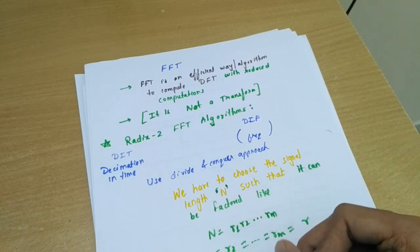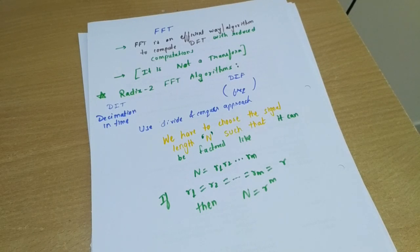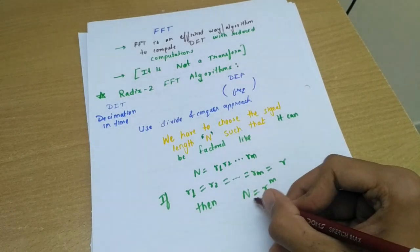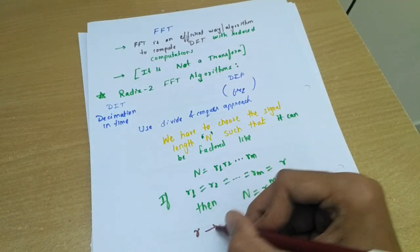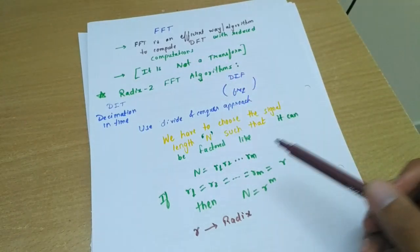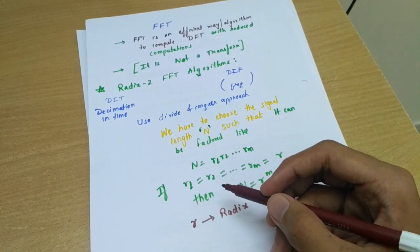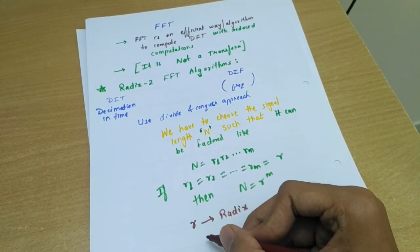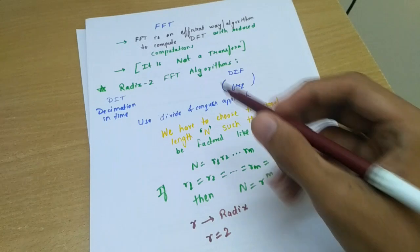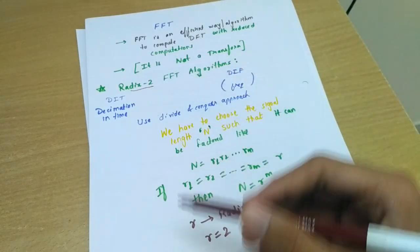So this factor N, this quantity R raised to m - so R indicates the radix. So whatever is our title, that is Radix-2, it means where radix is denoted by this R. And now the most practical implementation for our choice is for R equals to 2, and that is the reason we are dealing with Radix-2 algorithms.